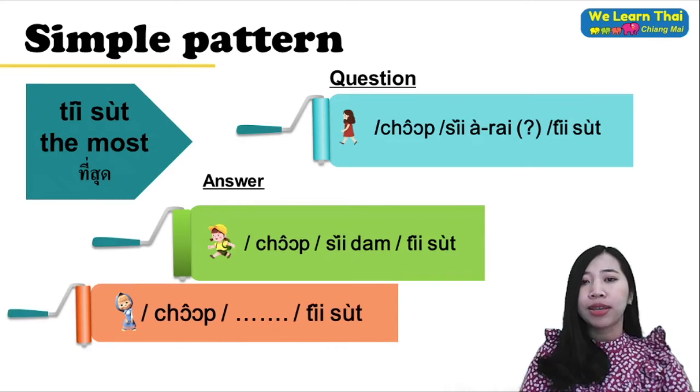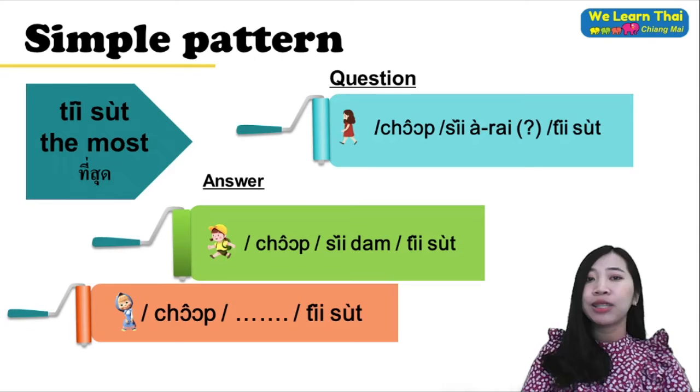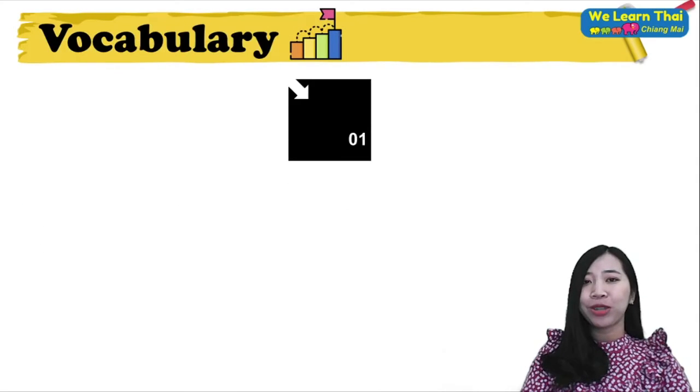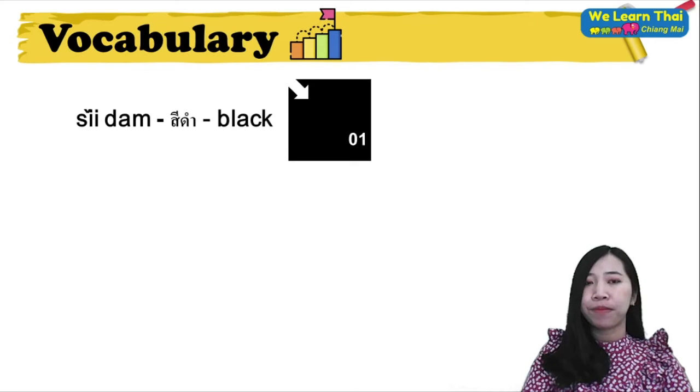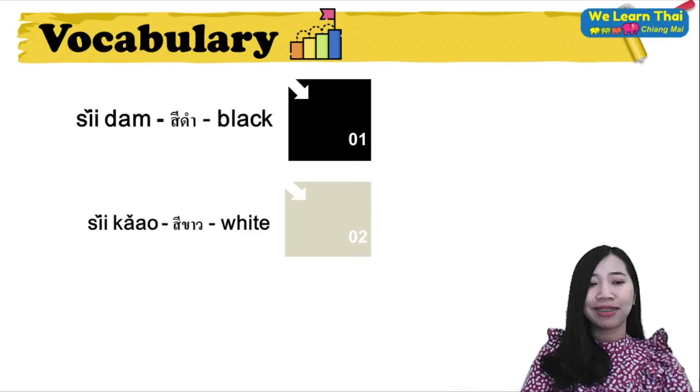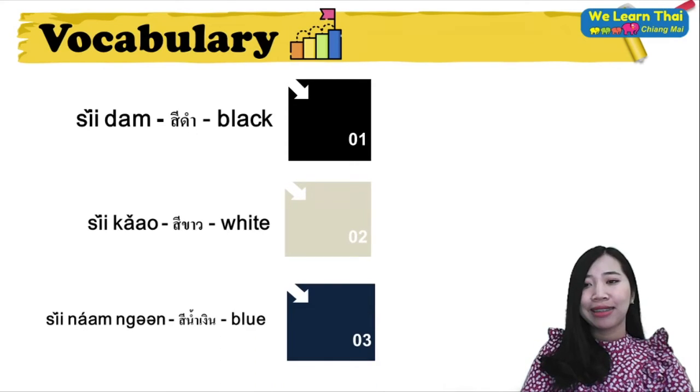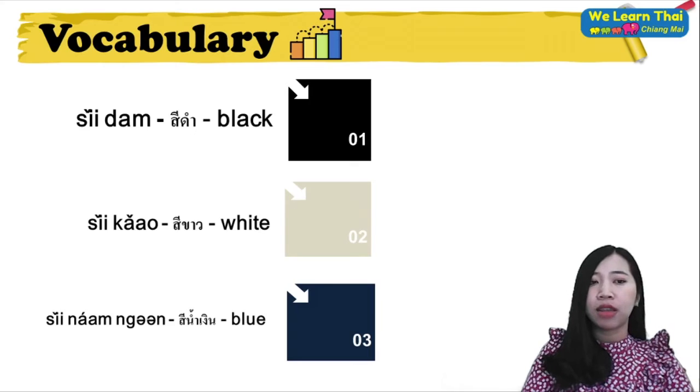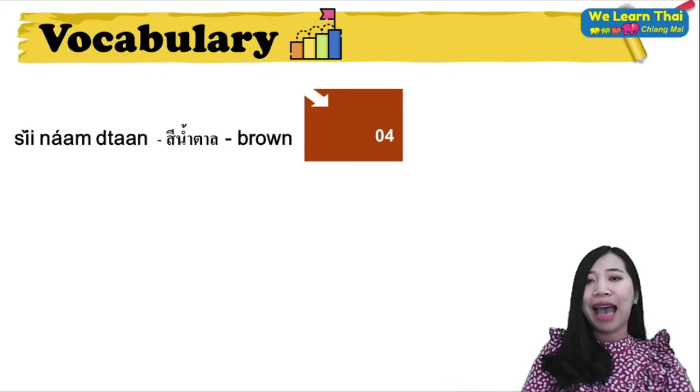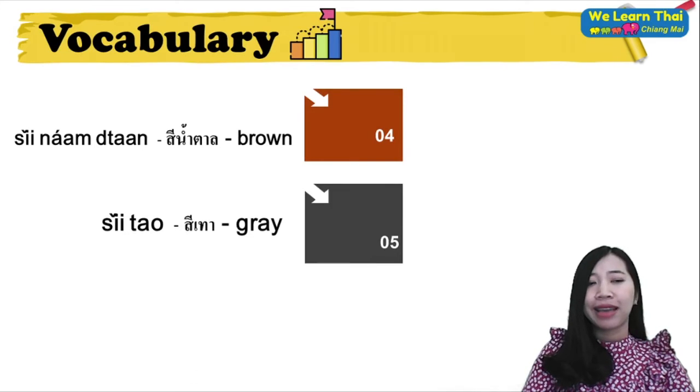Vocabulary: see dang is red, see khao is white, see nam ngoen is silver, see nam tan is brown, see thao is gray.